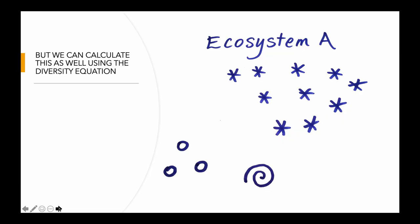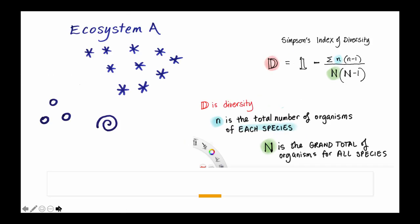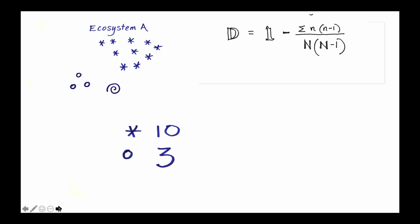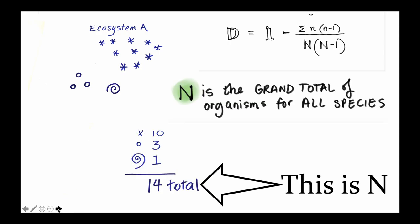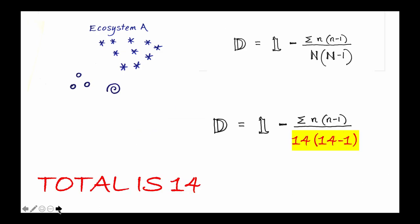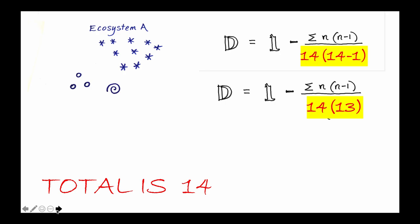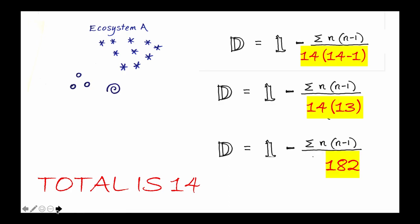We can calculate this using the diversity equation. Looking at Ecosystem A, big N is the grand total of organisms for all species. We have 10 stars, 3 circles, and 1 swirl, so big N equals 14. We can replace N(N−1) with 14 times 13, so the denominator is 182.